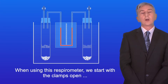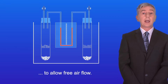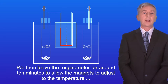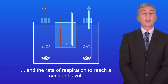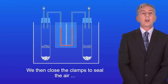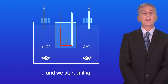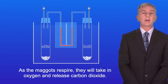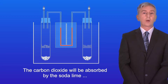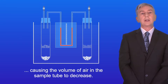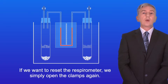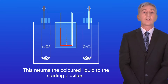When using this respirometer we start with the clamps open to allow free air flow. We then leave the respirometer for around 10 minutes to allow the maggots to adjust to the temperature and the rate of respiration to reach a constant level. We then close the clamps to seal the air and we start timing. As the maggots respire they will take in oxygen and release carbon dioxide. The carbon dioxide will be absorbed by the soda lime, causing the volume of air in the sample tube to decrease and the coloured liquid to move to the left. If we want to reset the respirometer we simply open the clamps again, which returns the coloured liquid to the starting position.